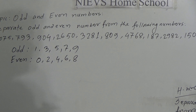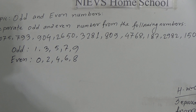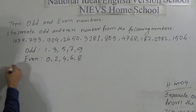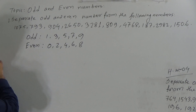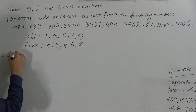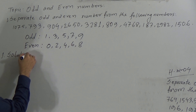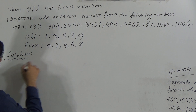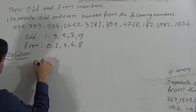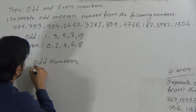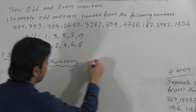Remember this. If you can remember this, you can separate all the numbers very easily. Okay, so I am solving the question. In the solution, we will write odd numbers in one column and even numbers in the other column.